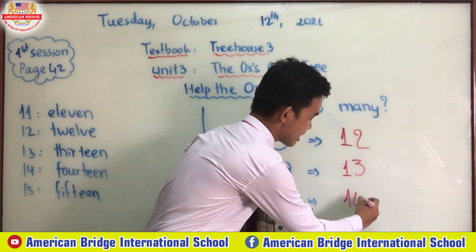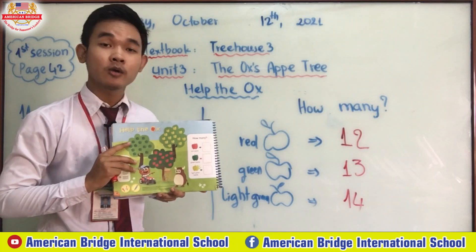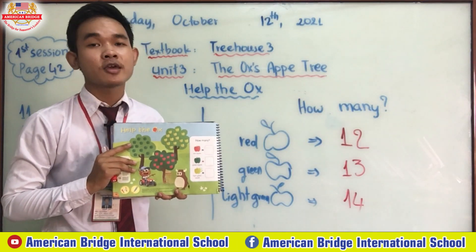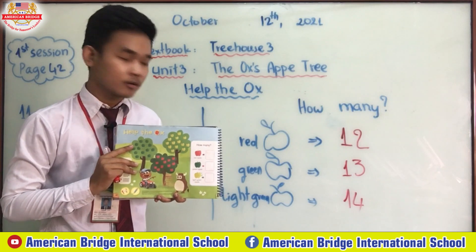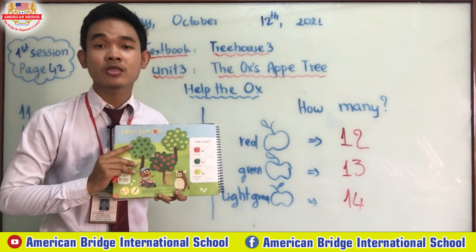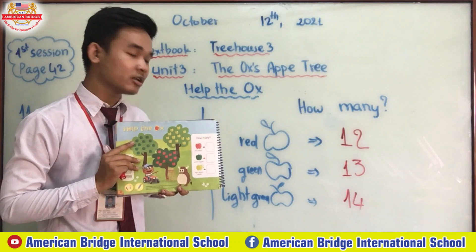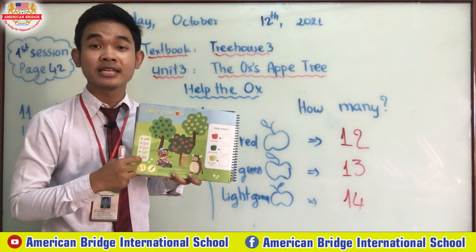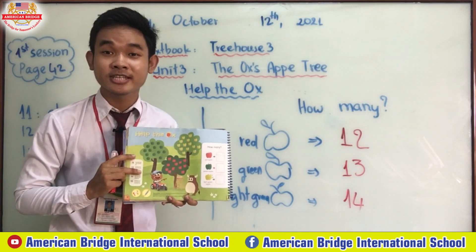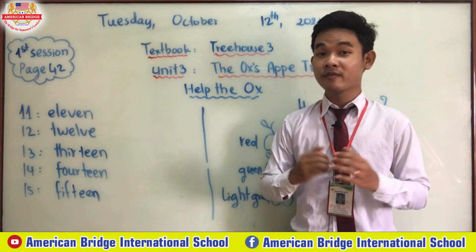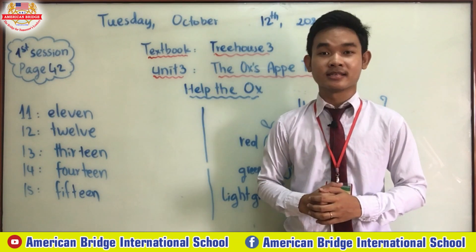Let's write number 14: one and four. So everyone: there are twelve red apples, there are thirteen green apples, and there are fourteen light green apples. We've finished our activity. Did you enjoy it? Let's say goodbye and see each other at the second session.